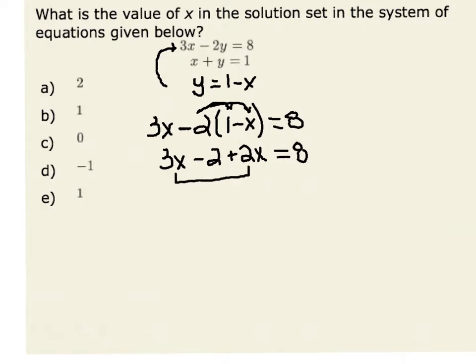Combining like terms, I have 3x plus 2x, which would give us 5x minus 2 is equal to 8.